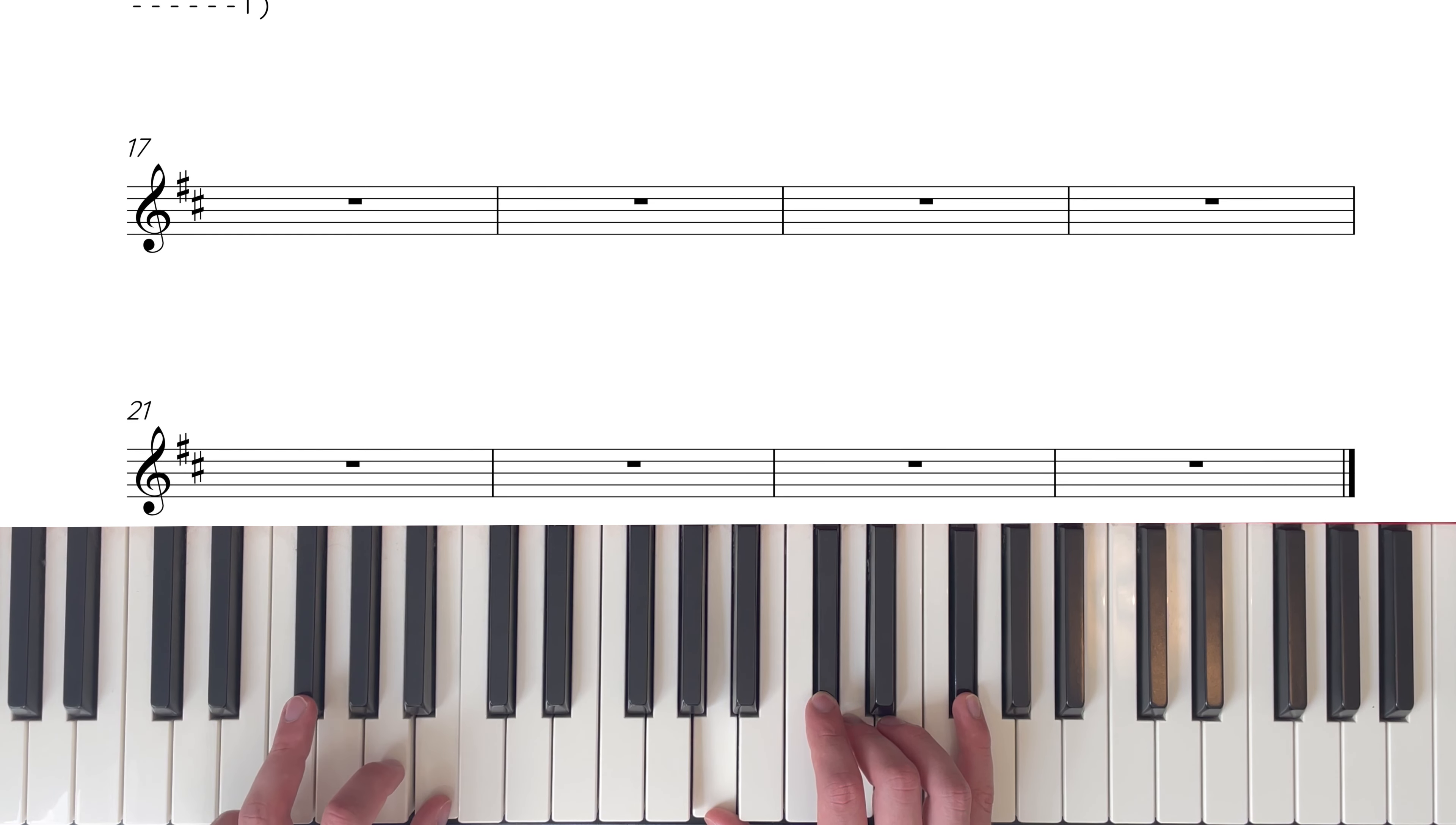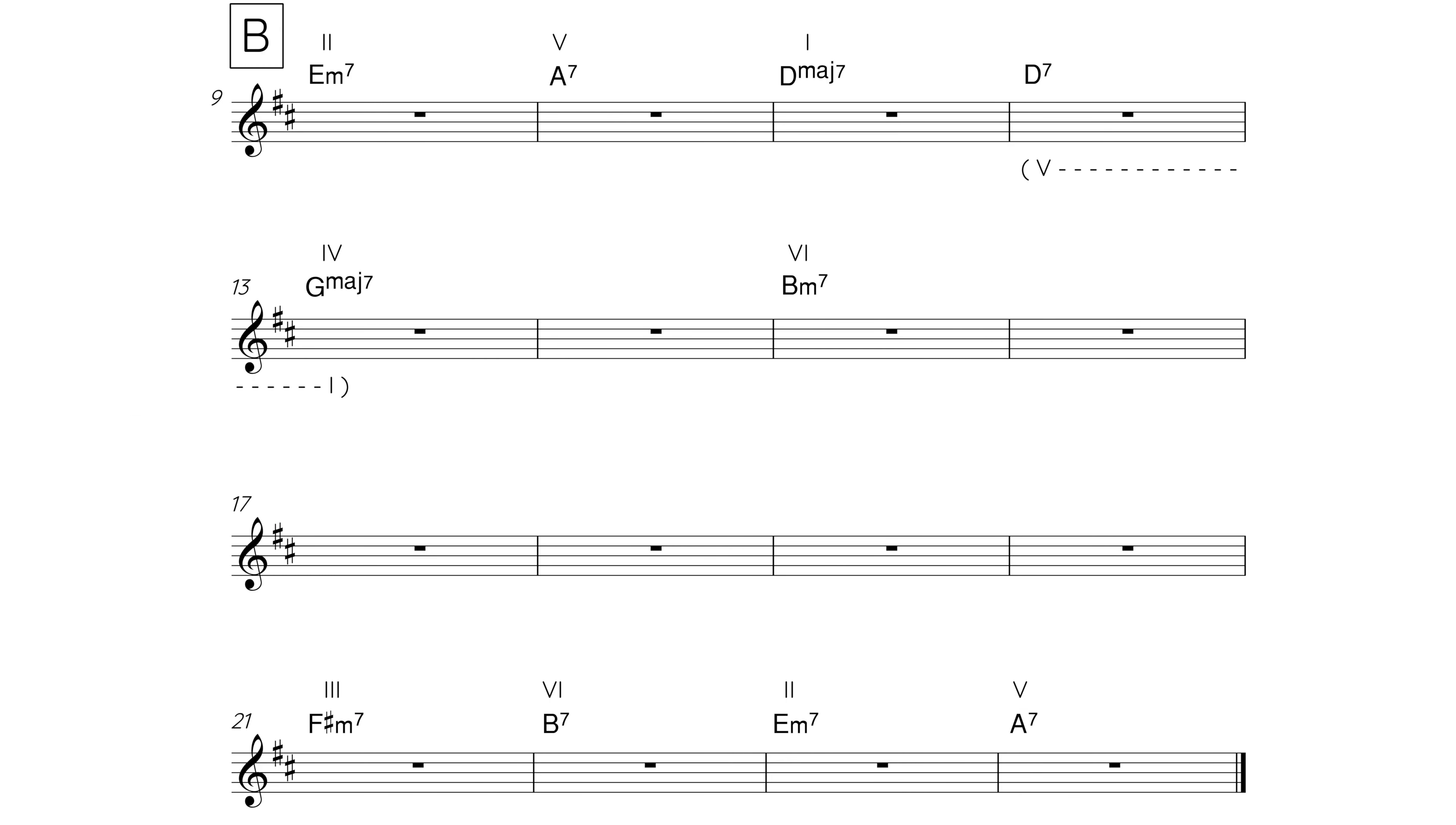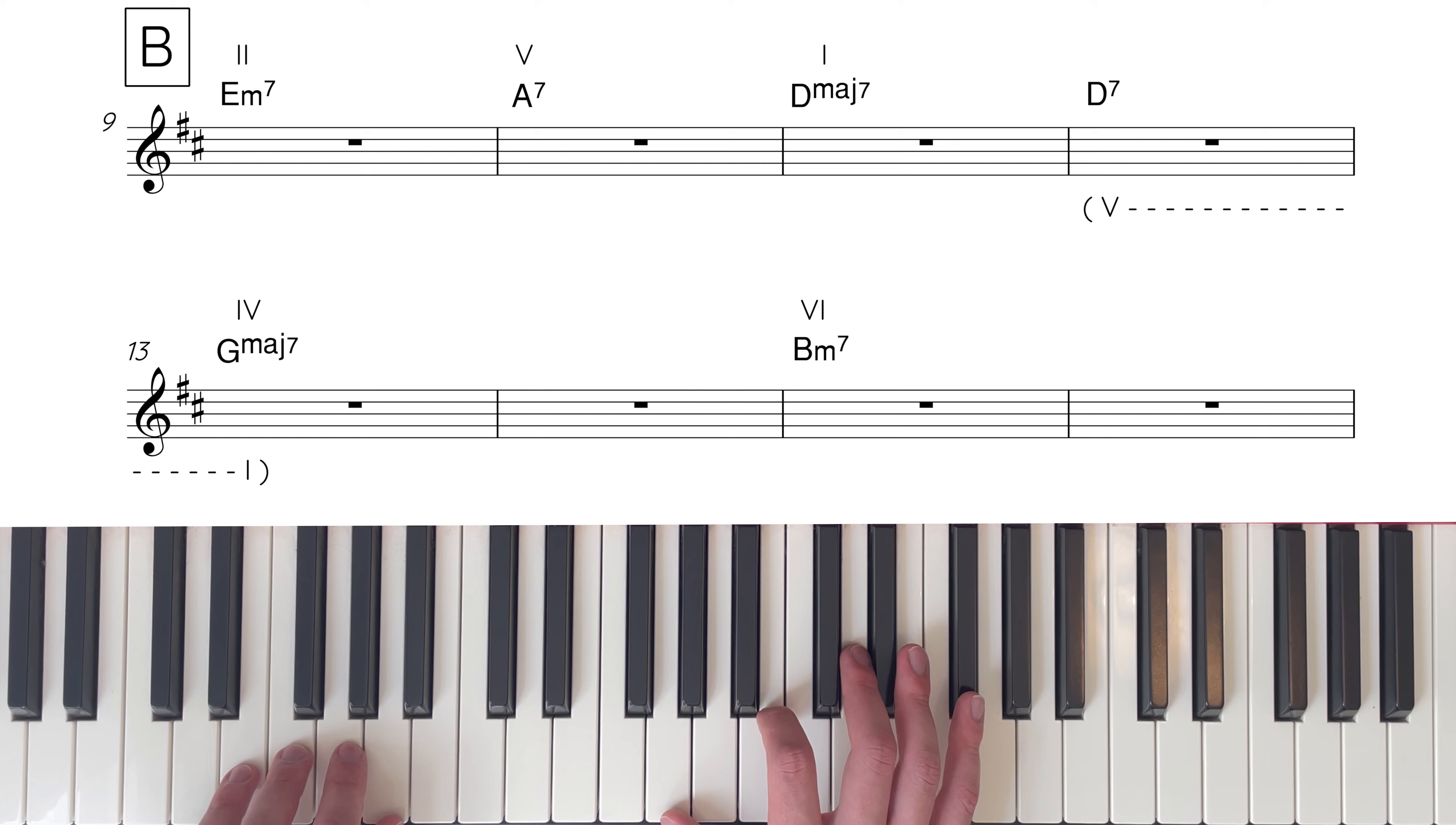We'll start by looking at the underlying foundation harmony, and then explain Cedar Walton's re-harms and methods of disguise later. This is a really important step for learning the tune, as it allows us to not only make sense of the actual chord changes, but improve our fluency when improvising. So, the B section starts with a 2-5-1 home to chord 1, D major. E minor 7 is the 2 chord, A7 is the 5 chord, and D major 7 is the 1 chord.